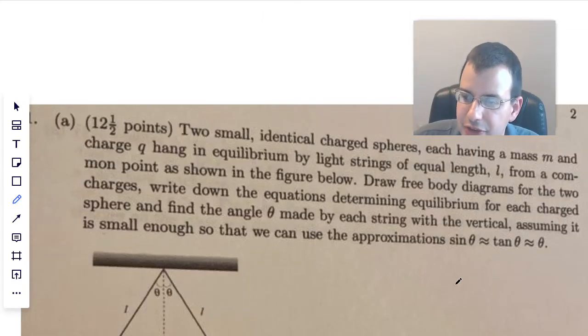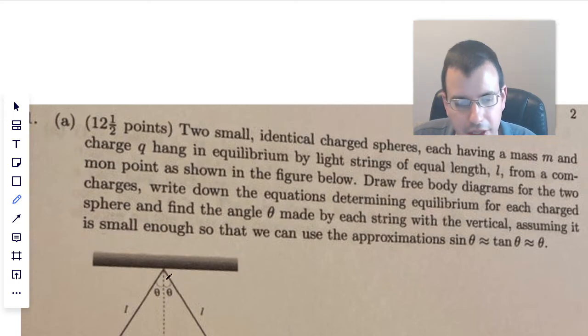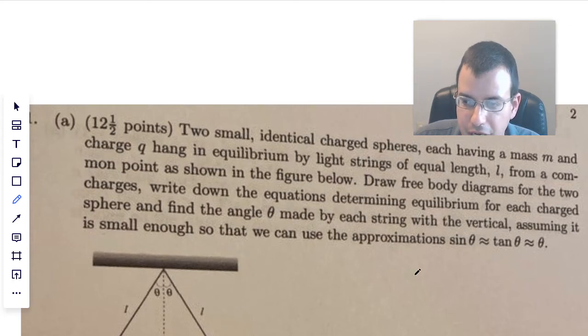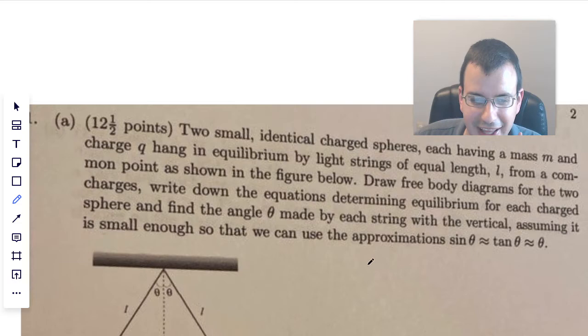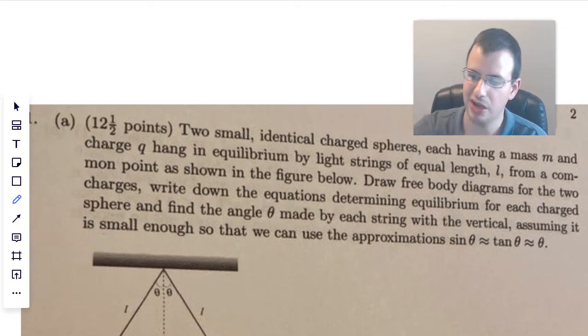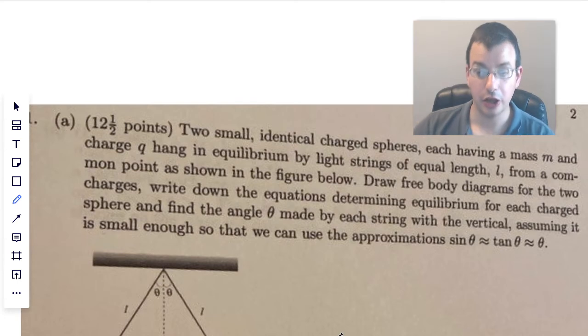Two small, identical charged spheres, each having mass m and charge q, hanging in equilibrium by light strings of equal length l from a common point as shown in the figure below. Draw a free body diagram for the two charges, write down the equations determining equilibrium for each charged sphere, and find the angle theta made by each string with the vertical, assuming it is small enough so we can use the approximation sine theta approximately equals tangent theta, which is almost theta.